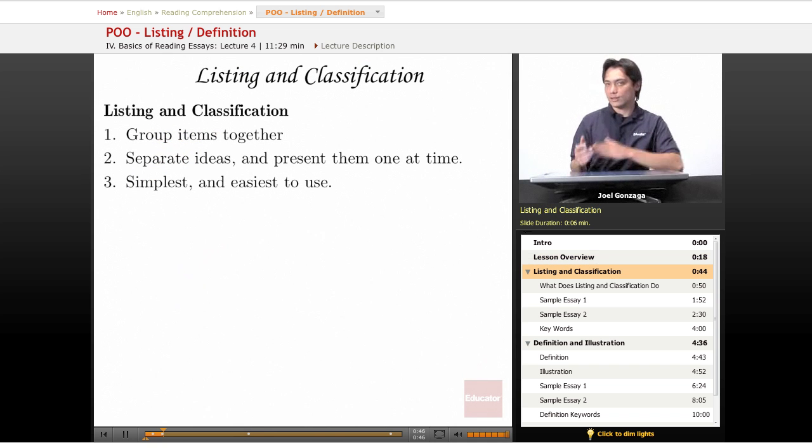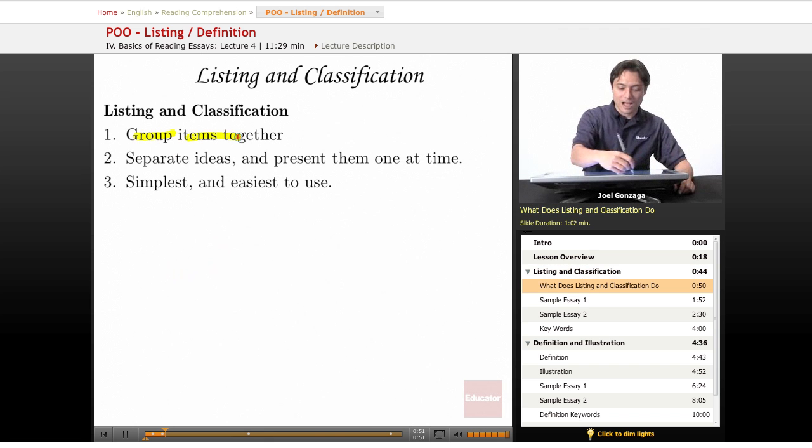So, listing and classification. What does listing and classification do? It groups items together.